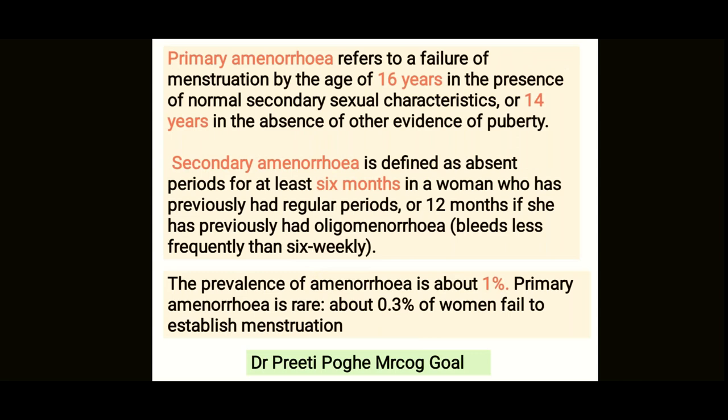Primary amenorrhea refers to a failure of menstruation by the age of 16 years in the presence of normal secondary sexual characteristics, or by 14 years in the absence of other evidence of puberty. So if secondary sexual characters are present and there is no menstruation, 16 years is the criteria; if secondary sexual characters are also absent, 14 years is the criteria.